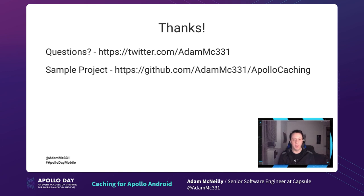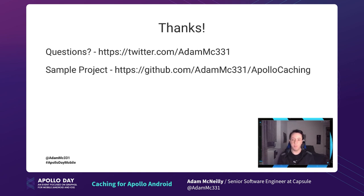I hope that was helpful to teach you everything you need to know about the Apollo cache — the HTTP cache, how to use it, its limitations, the benefits of the normalized cache, the difference between in-memory and SQLite, and how to debug the normalized cache. If you have questions, reach out on Twitter — my DMs are open. There's also a link to a sample project that has all the different caching implementations, along with documentation and resources for digging deeper into caching.